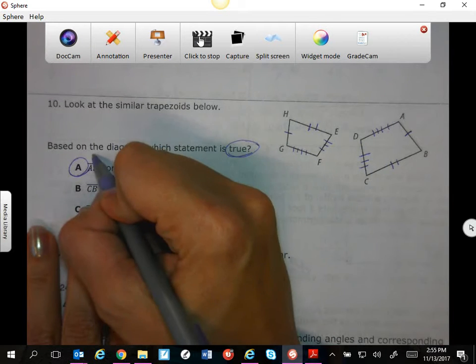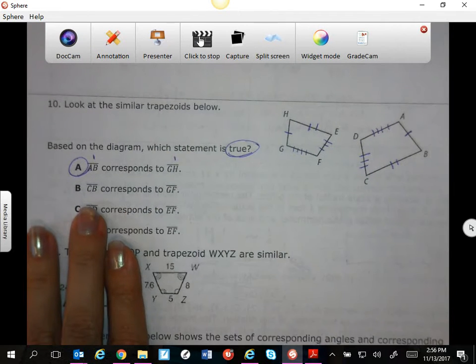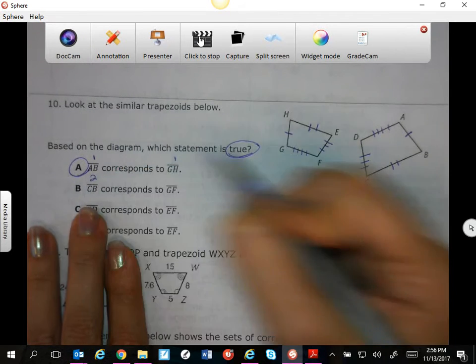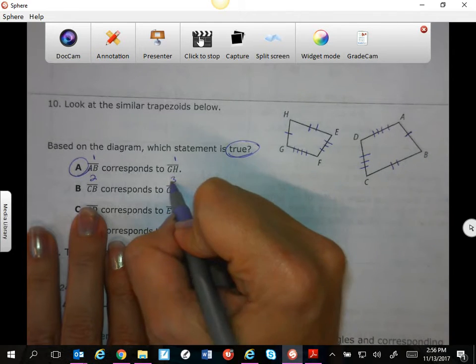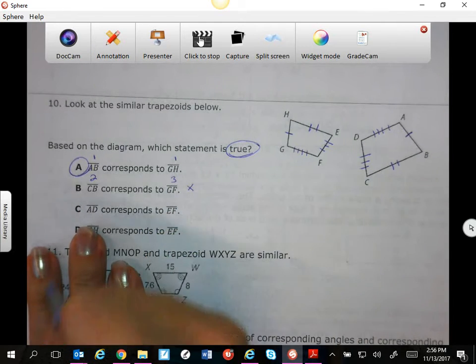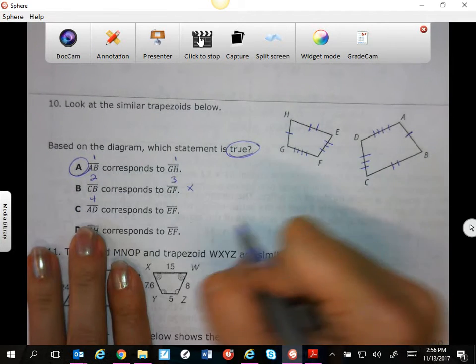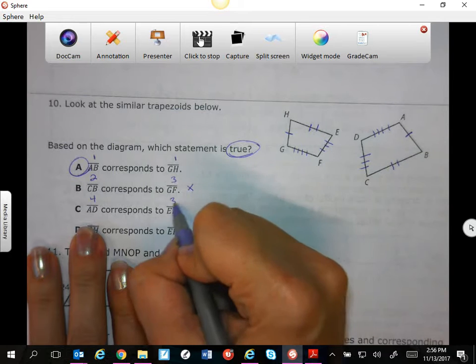Because both of those are labeled with ones. By some of the others, CV is 2 and GF is 3—nope. AD is 4 and EF is 3—nope.